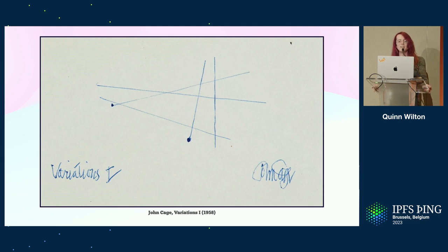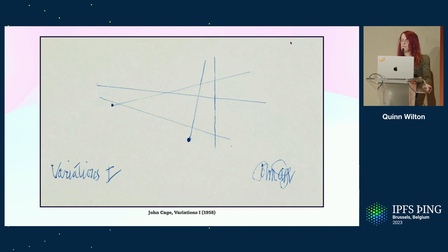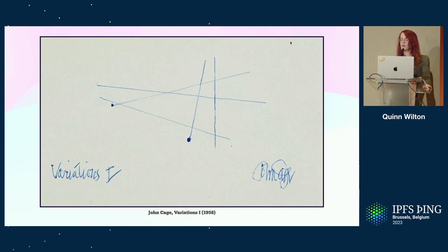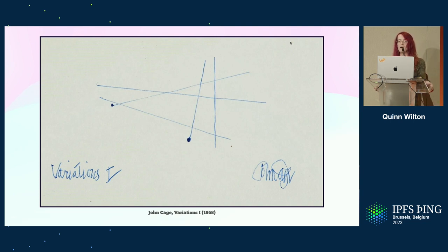This approach shows up again in 1958 with a piece titled Variations One, dedicated to a fellow musician named David Tudor. This was the first of a series of work centered around the use of transparent sheets. By overlaying these sheets together and interpreting the result according to the provided rules, new variants of the same piece could be constructed and performed by the musician.